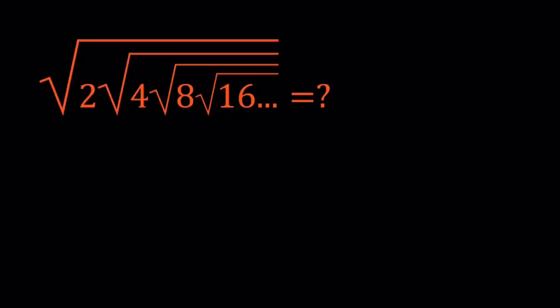First of all, I want you to notice that 2 is under 1 radical, 4 is under 2 radicals, 8 is under 3 radicals, 16 is under 4 radicals, so on and so forth. So whatever the power of 2 is, that's how many radicals that power is under.